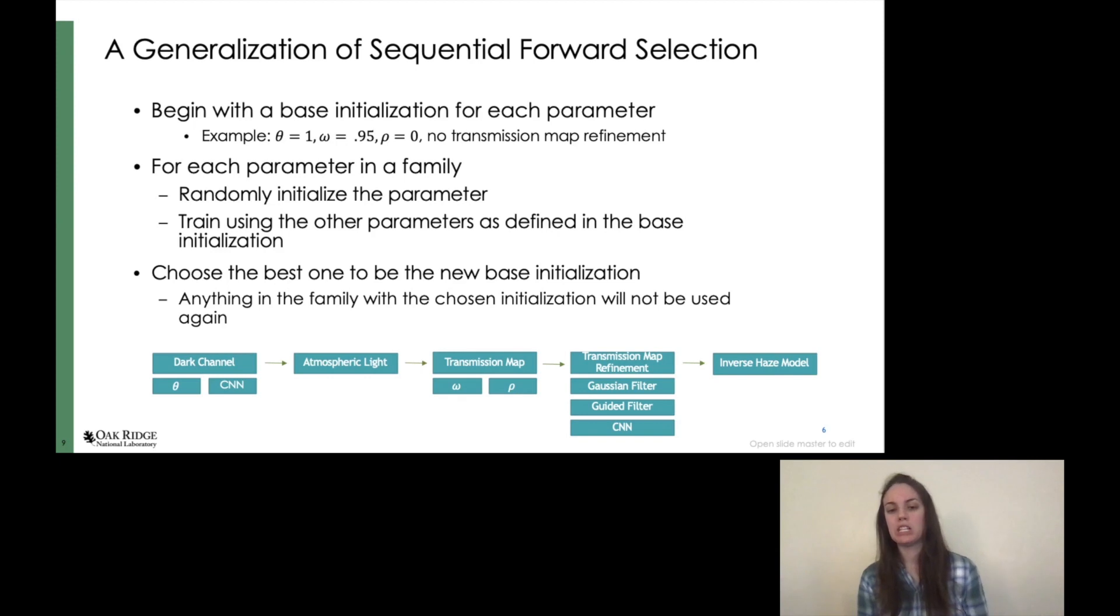Thus, we used a generalization of sequential forward selection in order to choose which parameter to use. We begin with a base initialization for each parameter. And then for each parameter in a family, we randomly initialize the parameter and train using the other parameters as defined in the base initialization. Then we choose the best one to be our new base initialization. Anything in the family with the chosen initialization isn't going to be used again. Julia's dispatching of types made this quite a bit easier to implement than it would be in other languages and likely contributed to the quick training time.